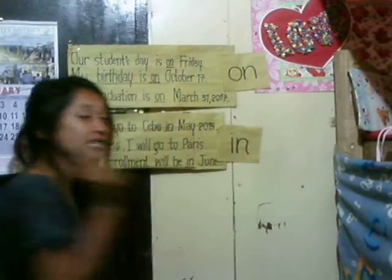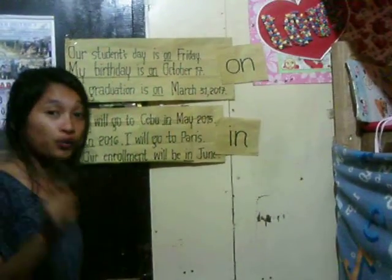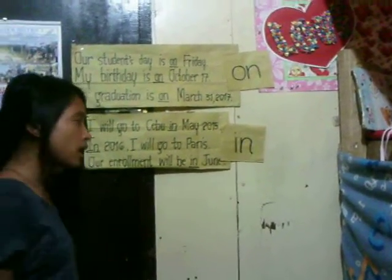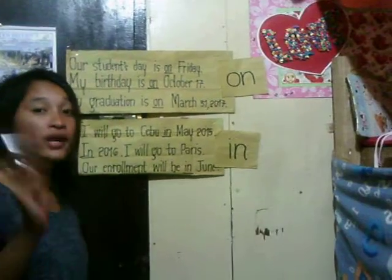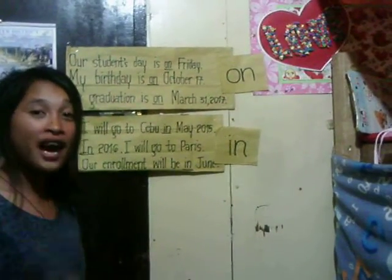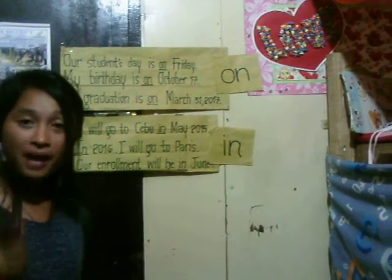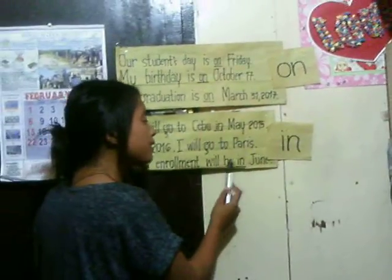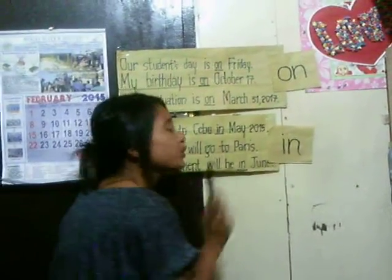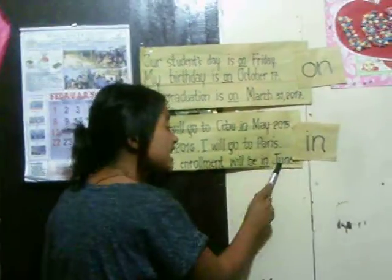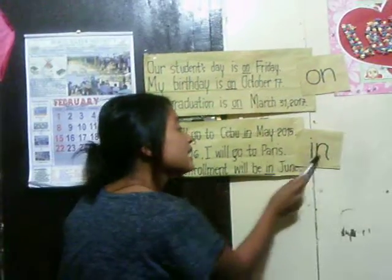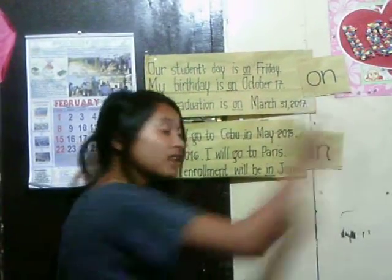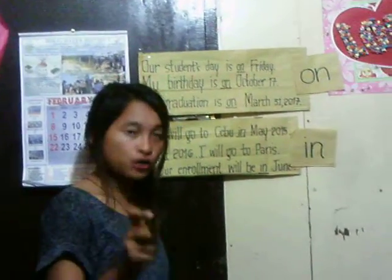The third one is when we specify the month. For example, our enrollment will be in June. June is the month, and in is the right form to use.